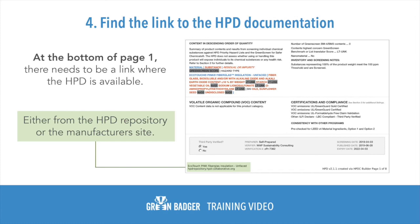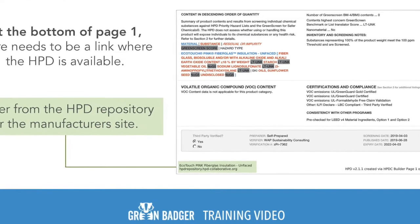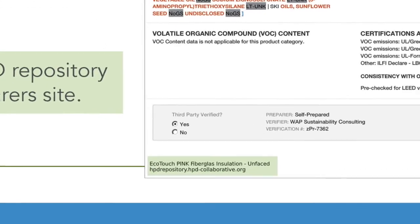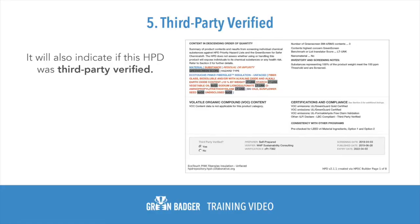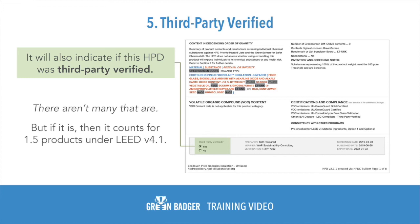At the bottom of page 1, there needs to be a link where the HPD is available, either from the HPD repository or the manufacturer's website. It will also indicate if this HPD was third-party verified. There's not a lot that are, but if it is, then it counts for 1.5 products under LEED version 4.1.